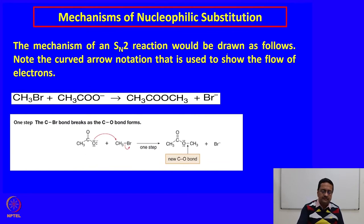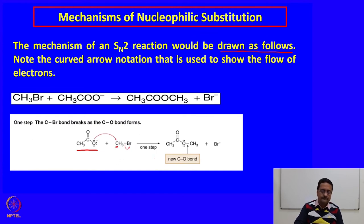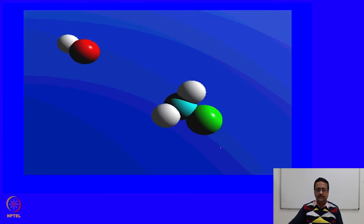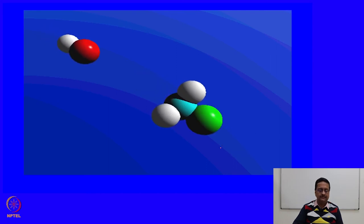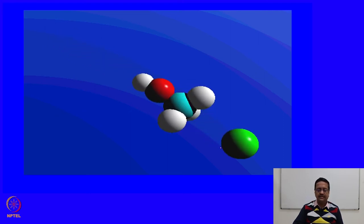The mechanism of an SN2 reaction is drawn using curved arrow notation to show electron flow. When a nucleophile like acetate attacks — the electron from oxygen attacks the carbon bonded to the bromine — in one step the product is formed and the bromide ion is eliminated. For example, OH minus attacks a methyl halide from the back side, and the halide group leaves the reaction medium immediately. This one-step mechanism is the most important feature of the SN2 reaction.